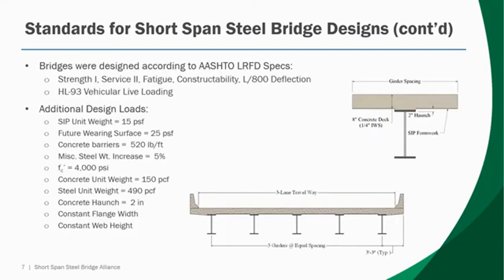Some more on the design assumptions — these would be very in step with the typical design assumptions used in short-span steel bridge design. We assumed a stay-in-place unit weight of 15 pounds per square foot and a future wearing surface of 25 pounds per square foot. We assumed concrete Jersey barriers as the traffic control at 520 pounds per foot. To account for bolts, studs, and any other miscellaneous steel, we increased the weight of the raw steel girder by 5%. We assumed 4 KSI compressive strength concrete with a unit weight of 150 pounds per cubic foot.